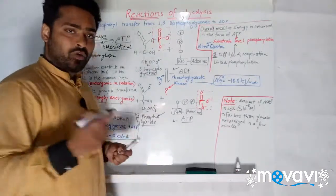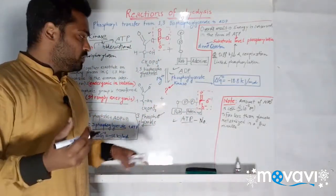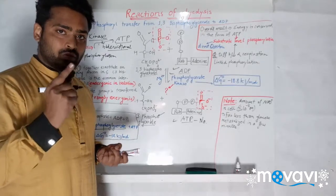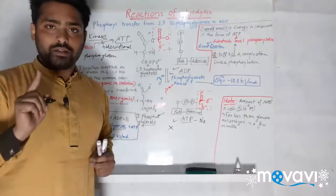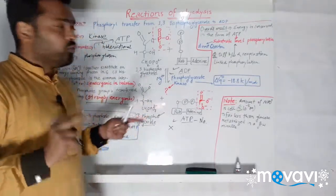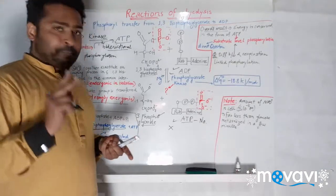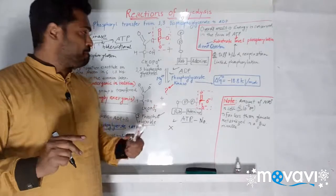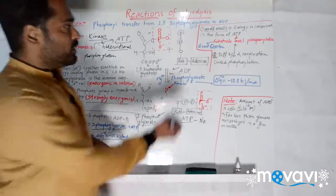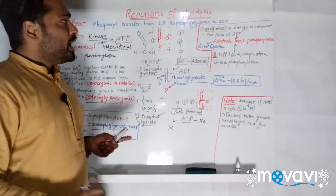Regarding the number of ATPs produced: it is not 1 ATP but 2 ATP. Why? Because in the background, the same reaction is occurring twice — we produced two molecules of glyceraldehyde 3-phosphate when dihydroxyacetone phosphate was isomerized into glyceraldehyde 3-phosphate, and both of those entered the payoff phase. We are showing only one reaction here, but two reactions are occurring simultaneously. So two ATPs have been produced, and the energy is conserved in the form of ATP.